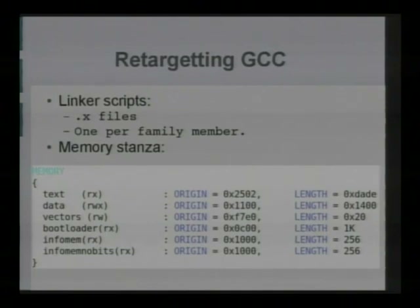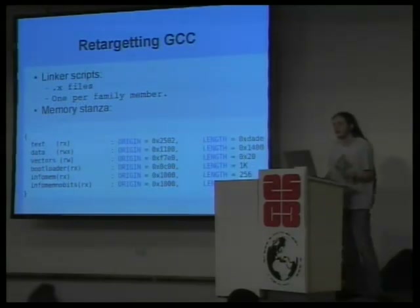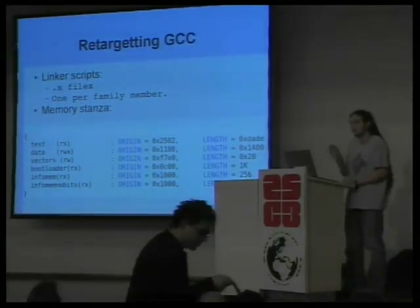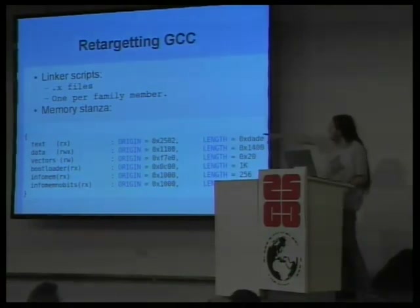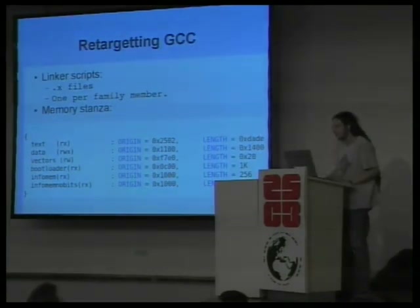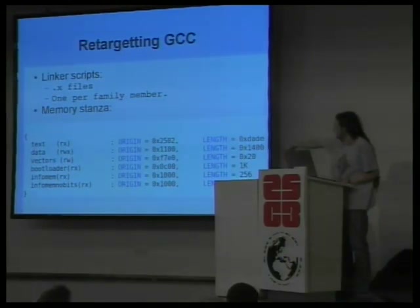We now know the loader stage exists from 0xF800 to 0x10000, that it proxies the interrupt vector table but does itself use interrupts — so it can only sit within a tight loop — and that it configures ports and clocks properly. The application stage is supposed to go from 0x2502 to 0xF7FF and the interrupt vector table begins at 0xF7E0. So we can write a new GCC target. In GCC there's a linker script — a .x file, one per family member. I moved the text region from 0x2500 to 0x2502 and reduced its length so it no longer collides with the end of memory. The data region is RAM and I left that unchanged. The vectors I moved down to 0xF7E0.